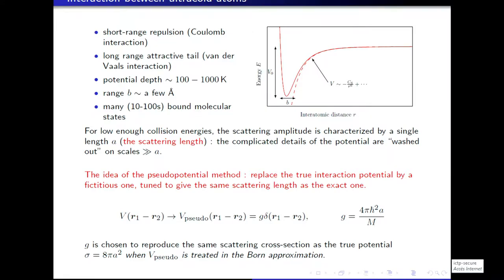If we were to take into account all this potential for the bound states and so on, it would be very daunting to attempt a description of a many-body system. Fortunately, when you work at very low temperatures, the collisional energy is also very low. Then the theory of scattering in quantum mechanics tells you that the scattering amplitude boils down to a single number A, called the scattering length — all the details of the collisions are buried into that one number.